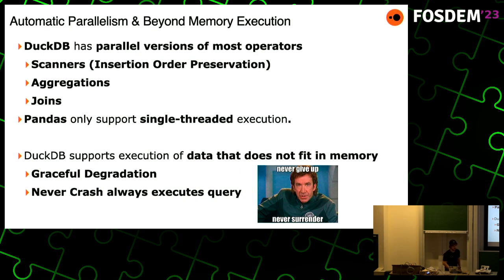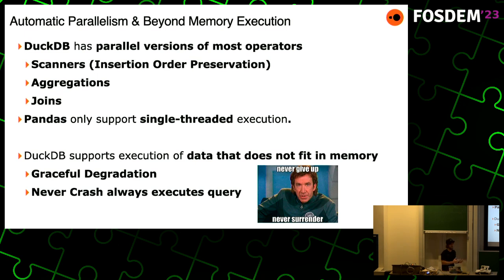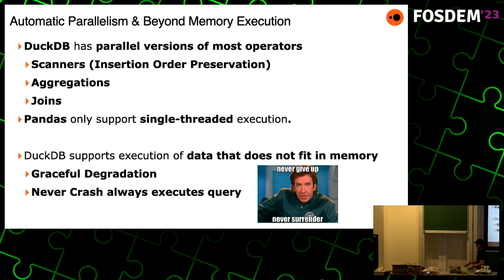DuckDB also has automatic parallelism and beyond-memory execution. DuckDB has parallel versions of most of its operators — all scanners including with insertion order preservation are parallelized, as are aggregations and joins. Pandas only supports single-threaded execution, which is a shame because we all have pretty good multi-core laptops these days. DuckDB supports execution of data that does not fit in memory — the never-give-up, never-surrender approach. We try to always have graceful degradation so performance doesn't suddenly crash, and the whole goal is to never crash and always execute the query.